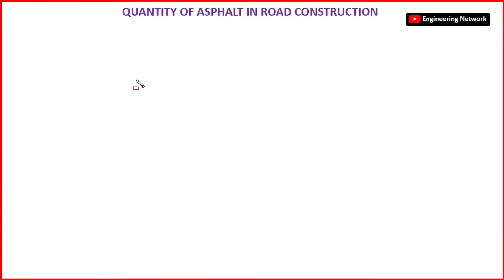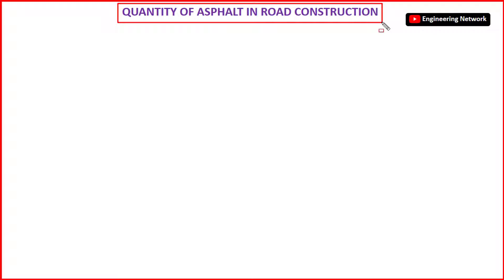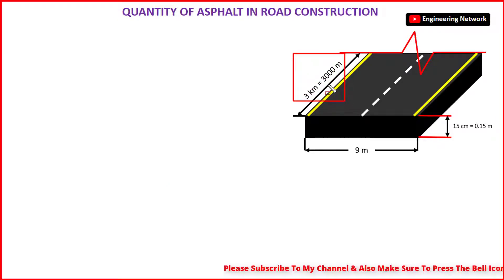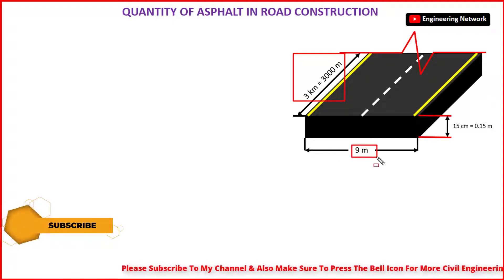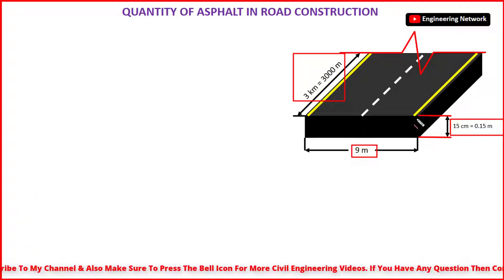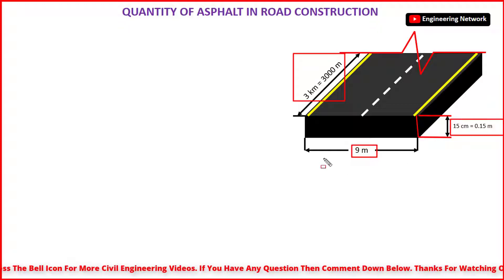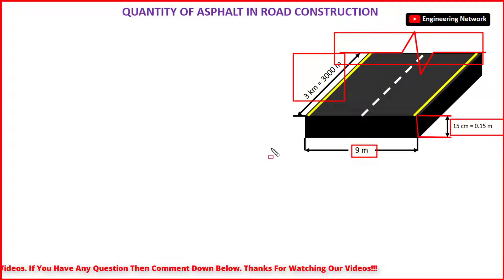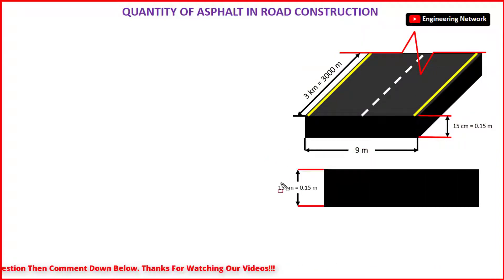Our topic for today's video lecture is how to calculate quantity of asphalt in road construction. As you can see, I have a road whose length is 3 km, which is equal to 3000 m. The width of this road is 9 m and the thickness of the asphalt layer is 15 cm, which is equal to 0.15 m. I have taken a section of this road right here, and you can also check the thickness of the asphalt layer which is 15 cm.